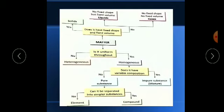Now one chart is given in your book, as I am showing you here. According to this chart, matter — does it have a fixed shape and fixed volume based on physical properties? If yes, it will be solid. If the answer is no, it may be liquid, which has no fixed shape but has fixed volume, and gases do not have either fixed shape or volume. Based on uniformity, there are two types: homogeneous and heterogeneous. If the answer is no, it is a heterogeneous mixture, and if yes, it is homogeneous.